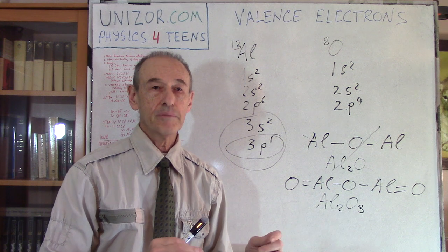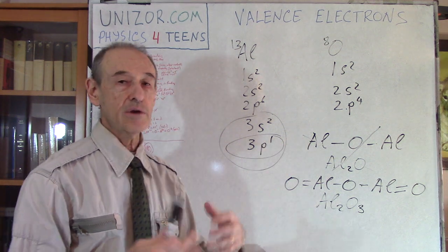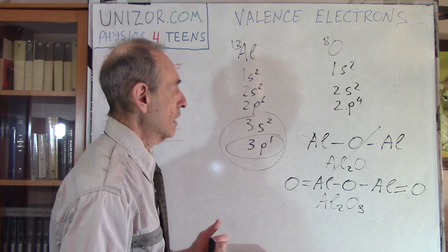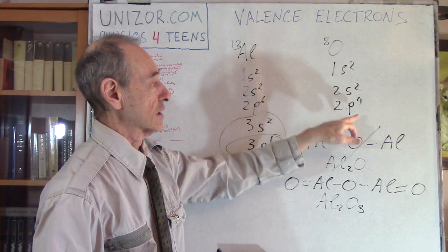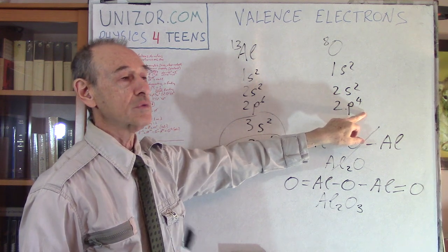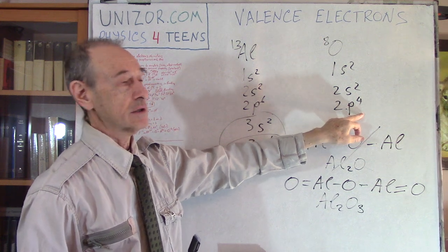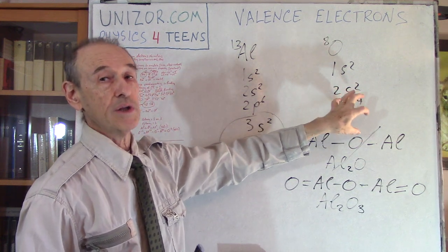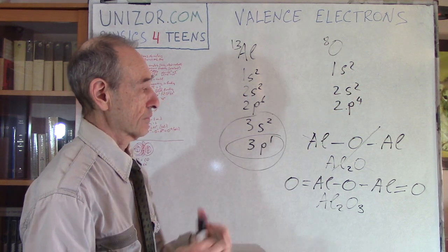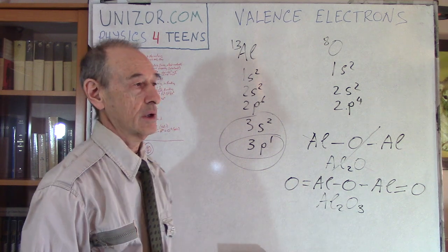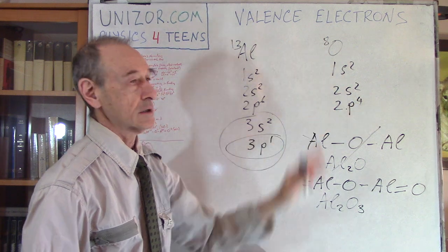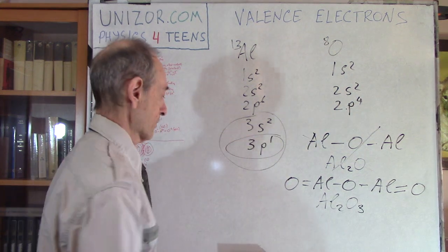Oxygen always has a valency of two, because it always needs exactly two electrons to complete its shell and all its subshells. With two electrons gained, the oxygen atom is complete — nothing left vulnerable or missing.